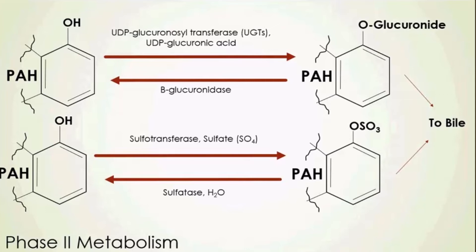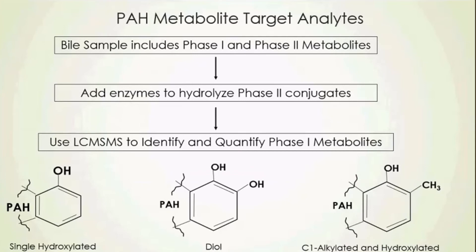These reactions are reversible — if we add a specific enzyme such as glucuronidase to the phase two metabolite, we cleave off that glucuronide molecule, rendering back the single hydroxylated product. We can go back and forth between phase one and phase two metabolites using specific enzymes, and this is important for how we prepare our samples. Our sample preparation procedure is based on the NOAA procedure — they have extensive experience and have been working on PAH metabolite method development for many years, so they're quite a bit further ahead of us at the petroleum chemistry lab.